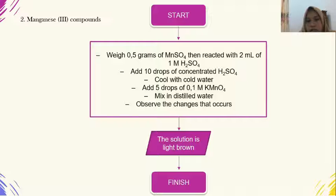Manganese(III) compounds: Weigh 0.5 grams of MnSO4, then react with 2 ml of 1 molar H2SO4. Add 10 drops of concentrated H2SO4, cool with cold water. Add 5 drops of 0.1 M KMnO4, mix in distilled water. Observe the changes that occur. The solution is light brown.